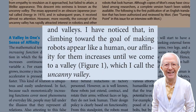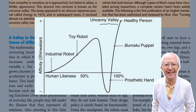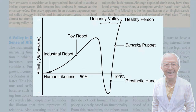Mori wrote: "I have noticed that in climbing toward the goal of making robotics appear human, our affinity for them increases until we come to a valley, which I will call the Uncanny Valley." To illustrate his thesis, he published a corresponding graph. The x-axis follows the human likeness of an object, from a basic robot to a healthy person. Beginning on the left, Mori uses an industrial robot as a baseline.